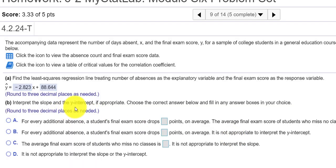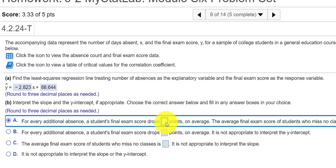So interpret the slope and the y-intercept if appropriate. So it looks like for every absence, if x is the number of absences and y is your score, every time you're absent, it looks like your score goes down by 2.823 points. So for every additional absence, the student's final exam drops 2.823.